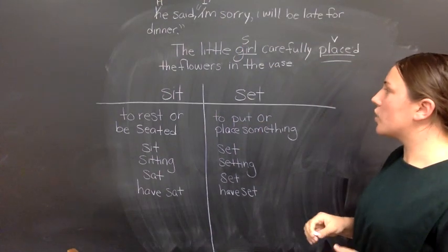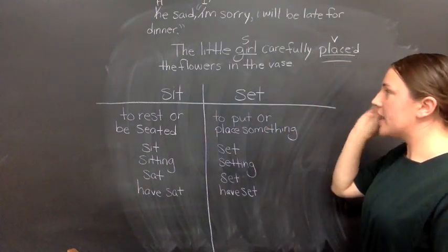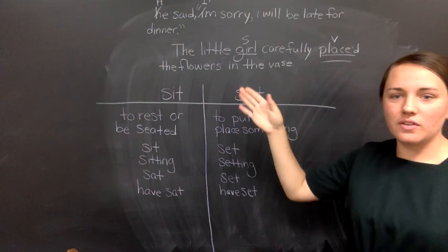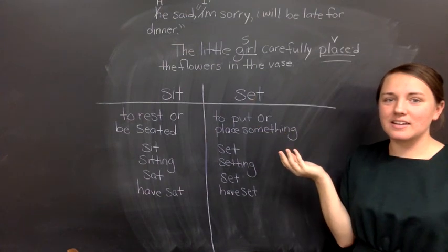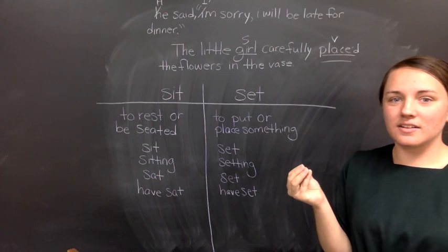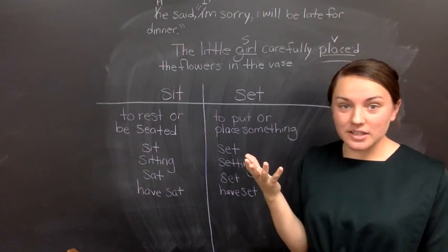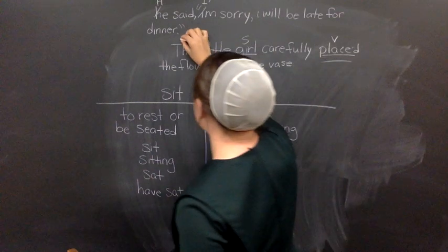Now, we're going to label just the first part here and diagram just that part. What are the and little? What are they doing? Those are describing words. What are they describing? They're describing girl. So, girl is a noun, which makes these adjectives.